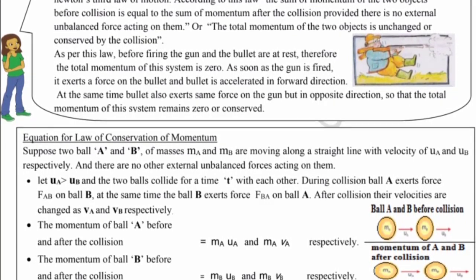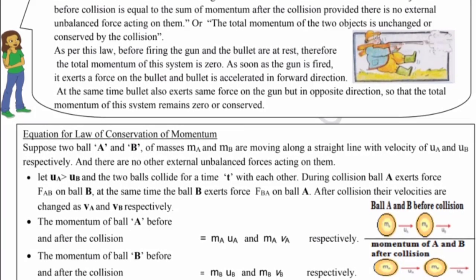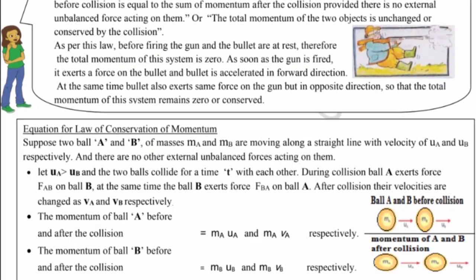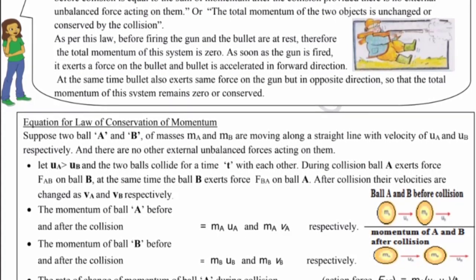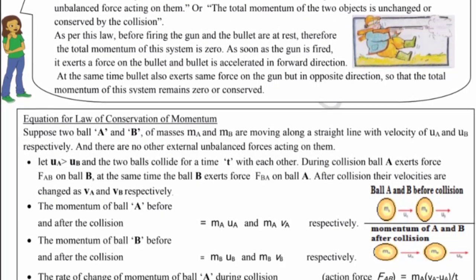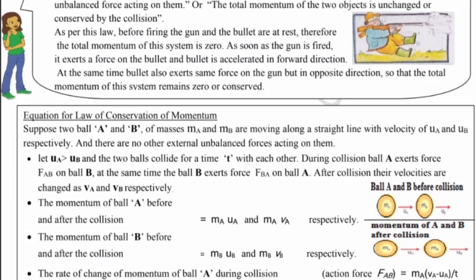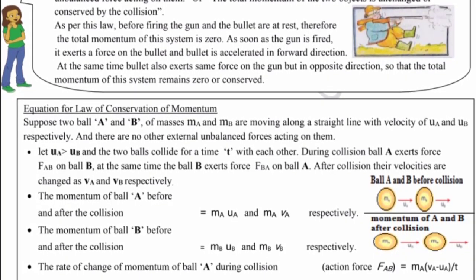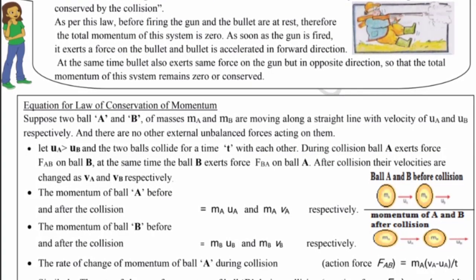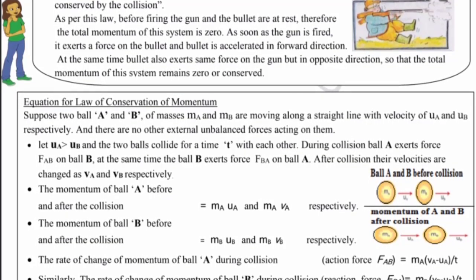Now we will derive equation for law of conservation of momentum. Suppose two balls A and B of mass mA and mB are moving along a straight line with velocity of uA and uB respectively, and there are no other external unbalanced forces acting on them. Let uA is greater than uB and the two balls collide for a time t with each other.